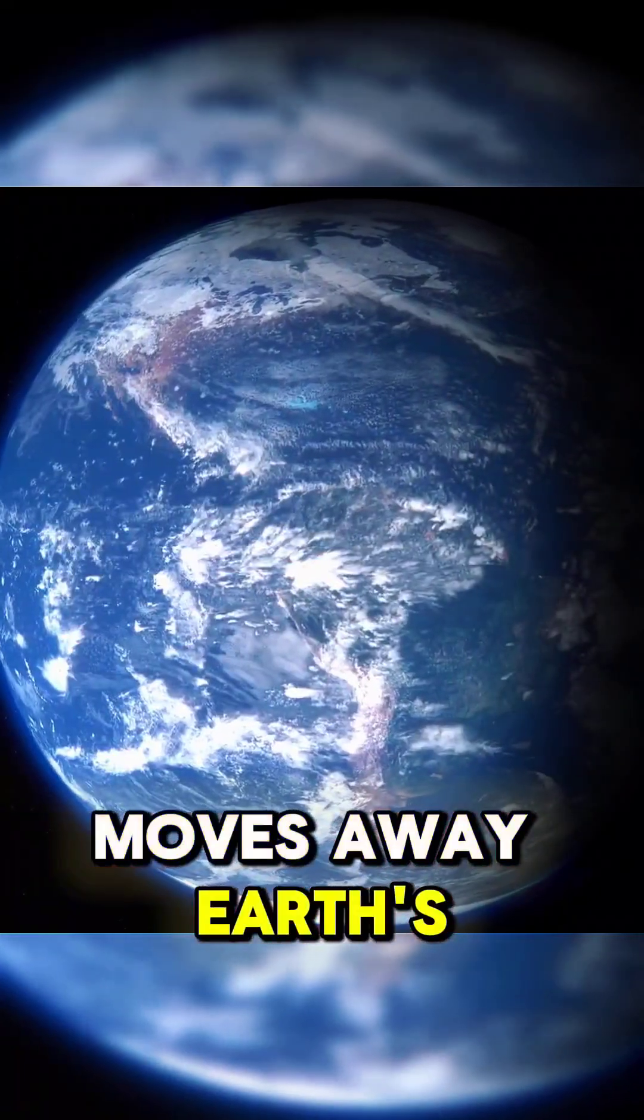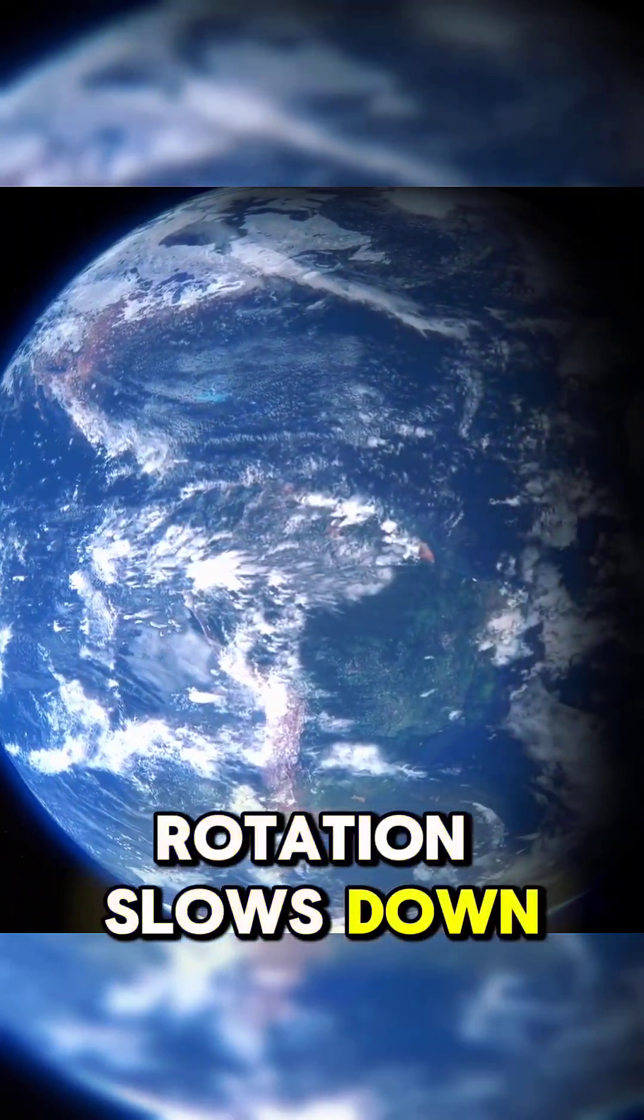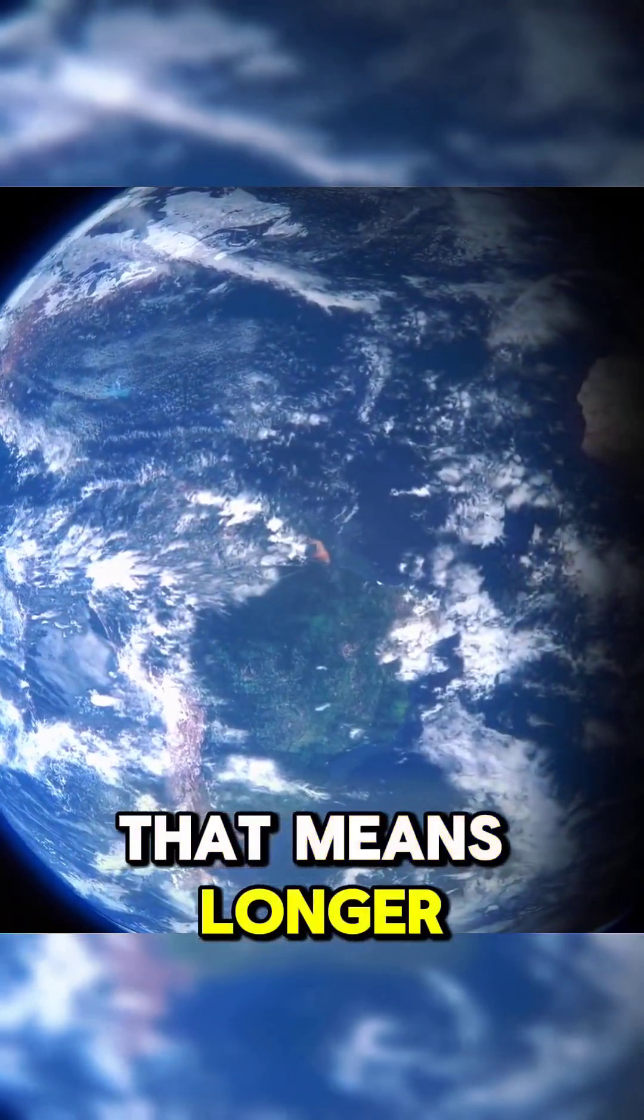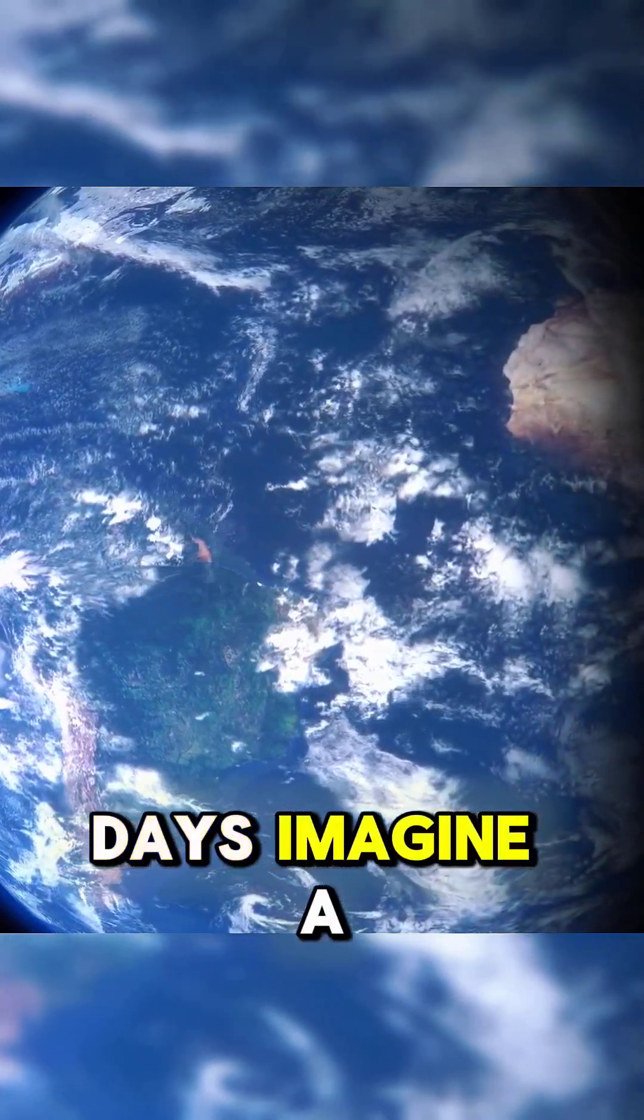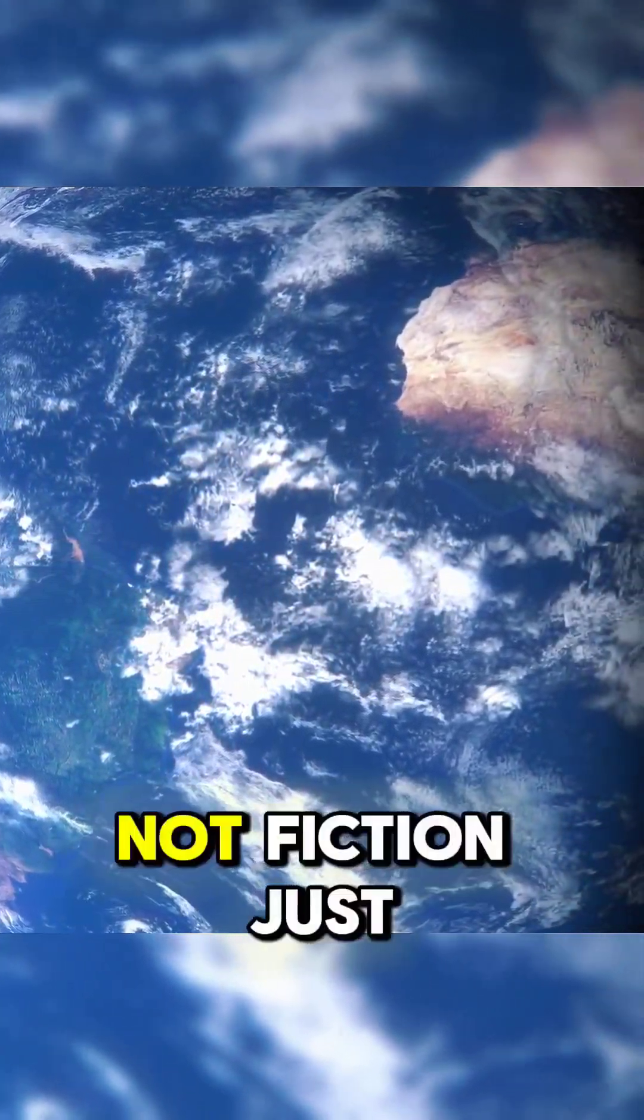As the Moon moves away, Earth's rotation slows down. That means longer days. Imagine a 30-hour day, not fiction, just a matter of time.